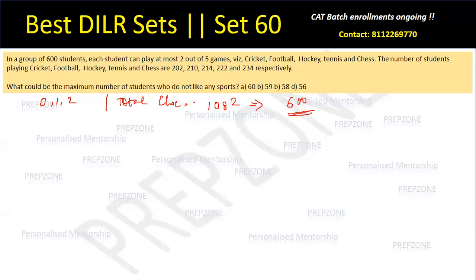What could be the maximum? Why do I use chocolate distribution? Because it is a classic case of overlapping sets. I was given one-on-one, and the maximum-minimum question was asked. Hence, not all information is given to me, so I am using the chocolate distribution method.